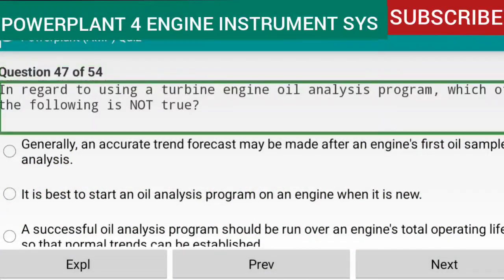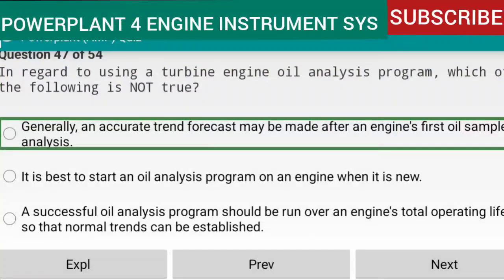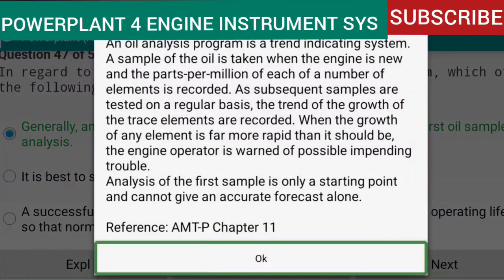Question 47 of 54: Regarding the turbine engine oil analysis program — it is not true that an accurate trend forecast may be made after an engine's first oil sample analysis. An oil analysis program is a trend-indicating system. A sample is taken when the engine is new and parts per million of each element are recorded. As subsequent samples are tested regularly, the trend of trace element growth is recorded. Analysis of the first sample is only a starting point and cannot give an accurate forecast alone. Reference: AMTP Chapter 11.